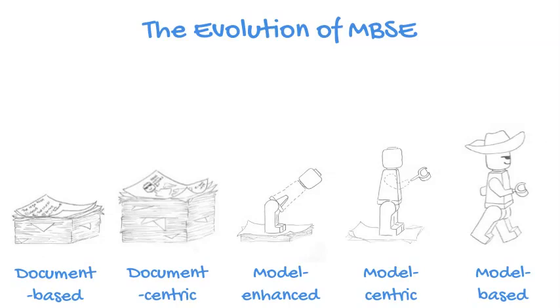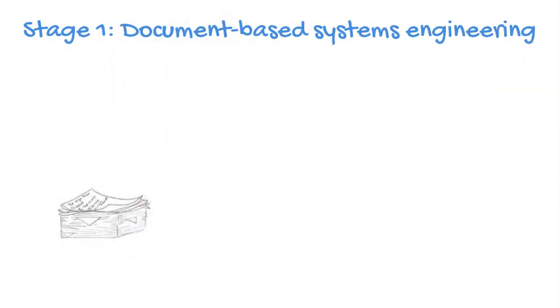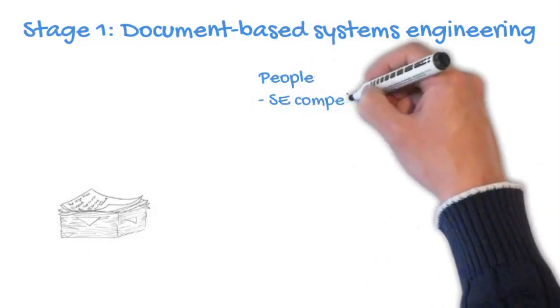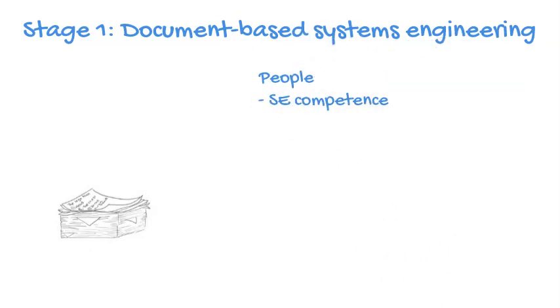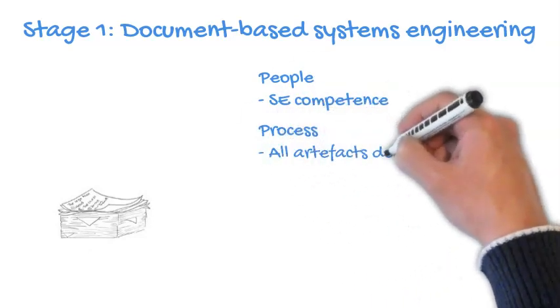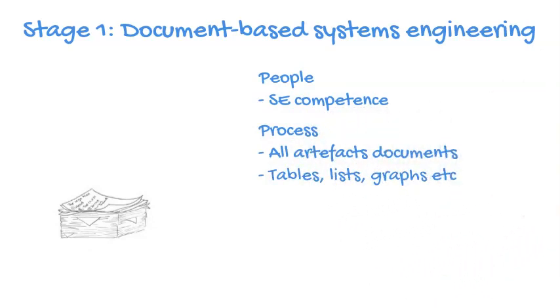Let's look at each stage in turn, considering the people, process, and tools needed. In stage 1, document-based systems engineering, the people will have systems engineering competence — a good basic skill set — and they should be carrying out systems engineering, albeit document-based. The process artefacts will all be documents: tables, lists, graphs, and so on. They're very heavily text-driven, and the lists and graphs might very well be independent of the text descriptions.